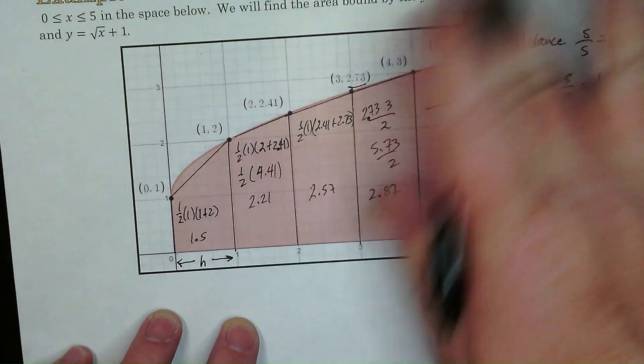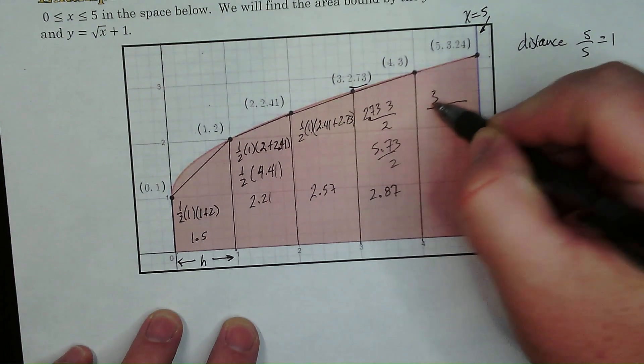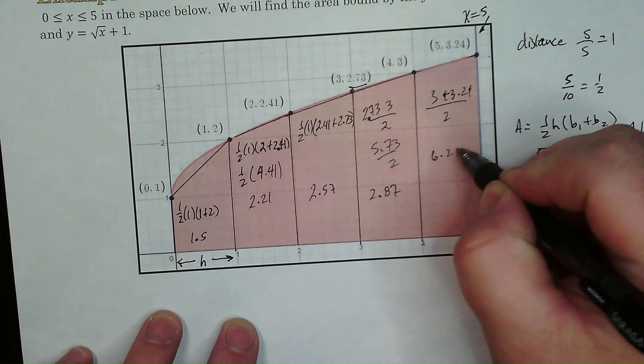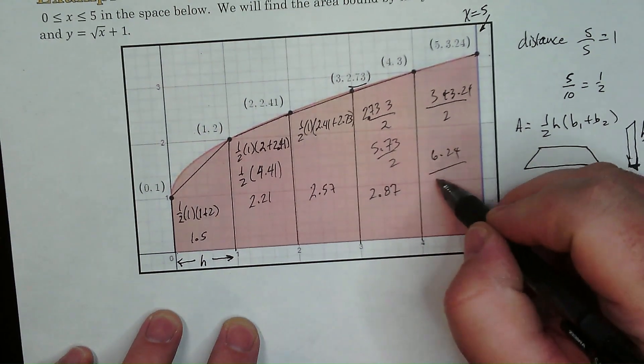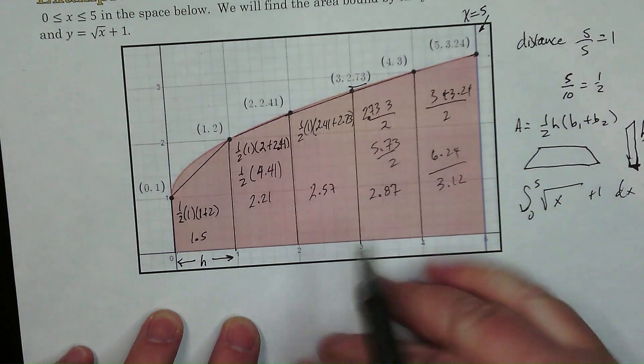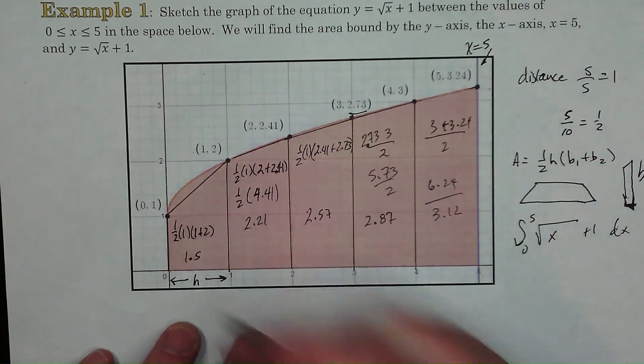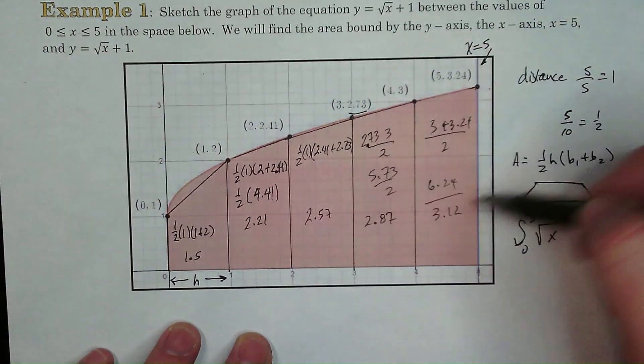So we're going to have 3 and 3.24. So that's right. 3.12. There we go. So those are all of our, those are all the trapezoids there.